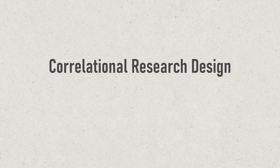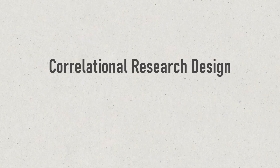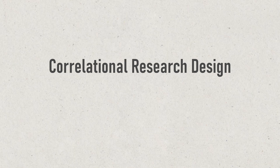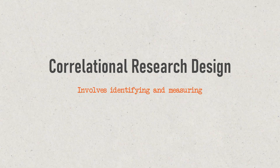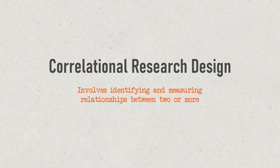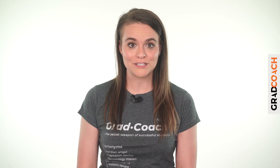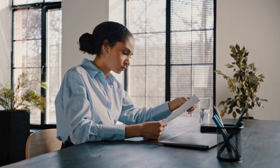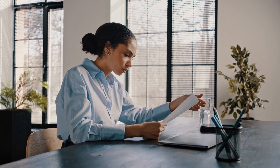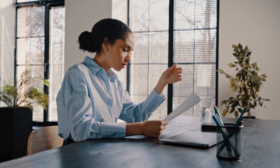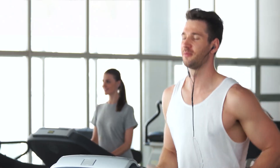Next up, we've got correlational research design. This type of design is a popular choice for researchers looking to identify and measure relationships between two or more variables without manipulating them. In other words, this research design is useful when you want to know whether a change in one thing tends to be accompanied by a change in another. For example, if you wanted to explore the relationship between exercise frequency and overall health, you could use a correlational design.